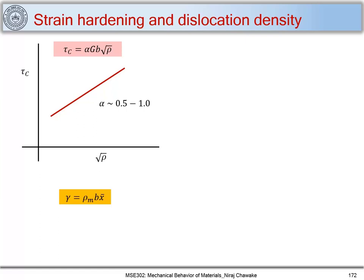When b and x-bar are constant, as γ (plastic strain) increases, ρ_m also increases. And as dislocation density ρ increases, the critical shear stress required to move the dislocations will also increase. So from these two relations, as we increase strain or continue plastic deformation, dislocation density increases and this increase further raises the stress required to move the dislocations.